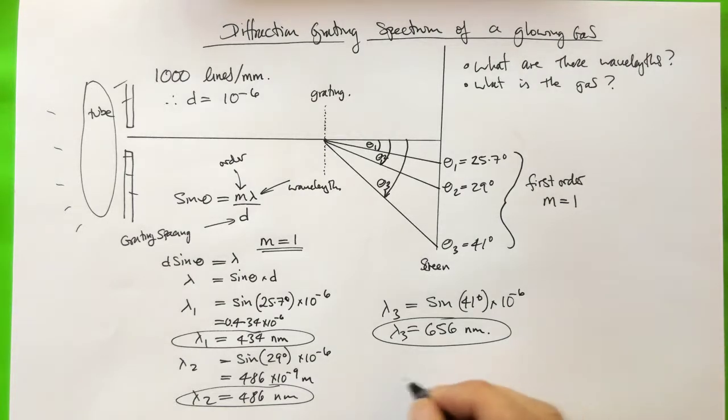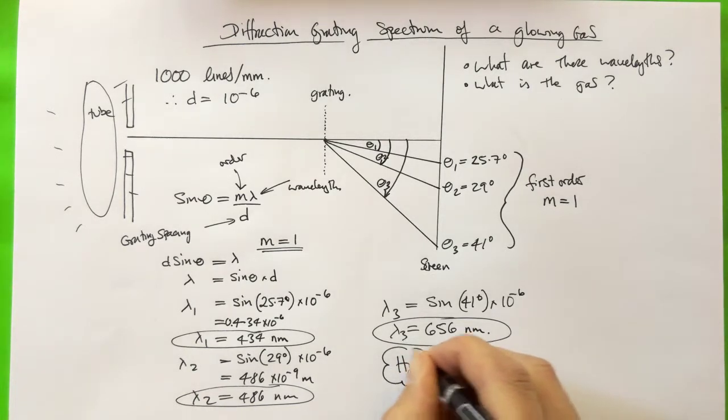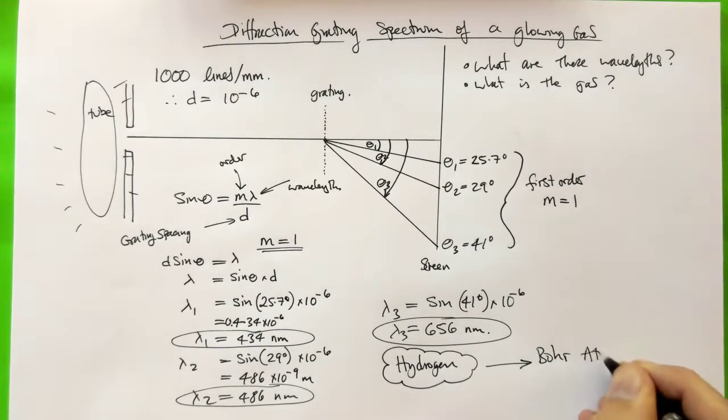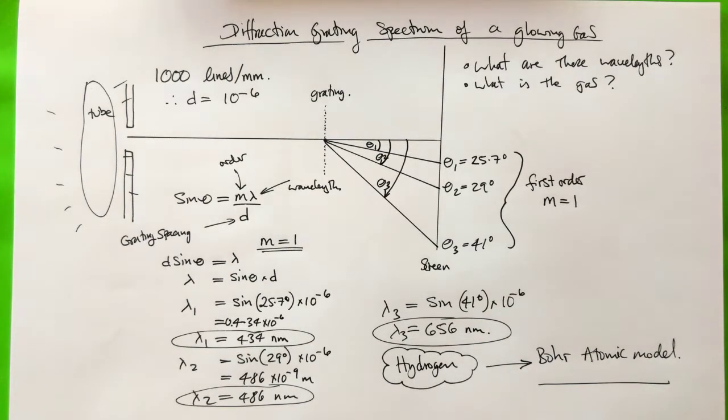And so this gas, it turns out, is hydrogen. And the reason why we know it's hydrogen is because the Bohr model of the atom, which is going to be one of the future questions in this section, which you can go and look at in the lecture notes. So that will be something to go and look at next, the Bohr model of the atom. How does spectroscopy lead us to understand what is the structure of the atom? So we'll leave that for our future session and end it there.